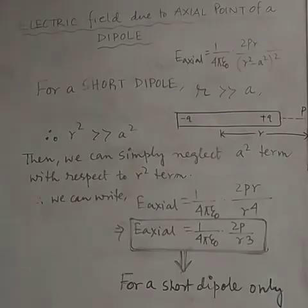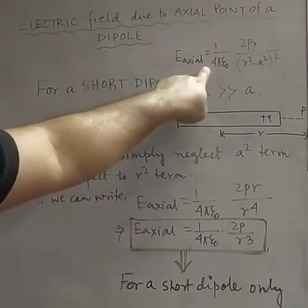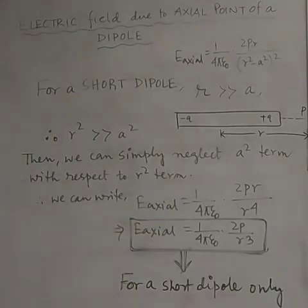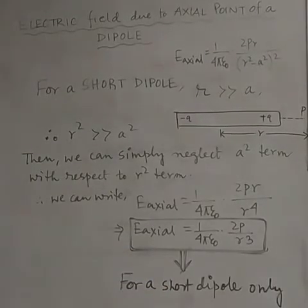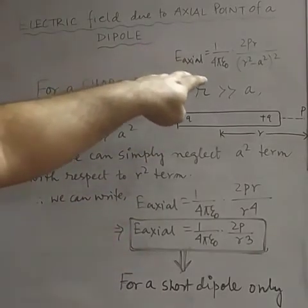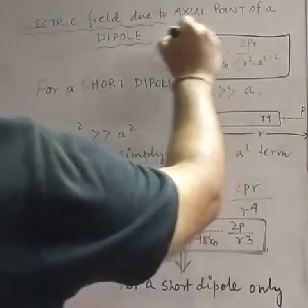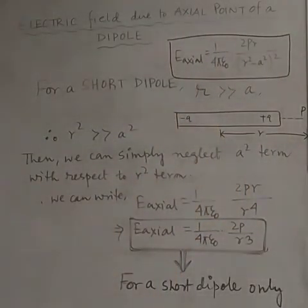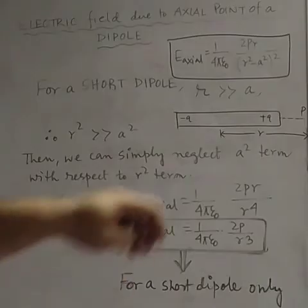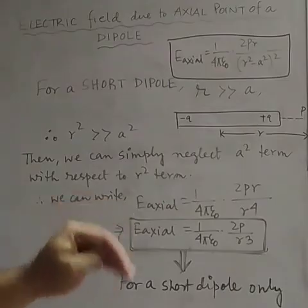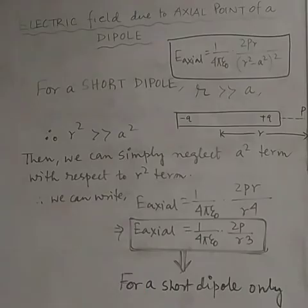This simplified expression E = (1/4πε₀)(2p/r³) applies only for a short dipole, not for a normal dipole. If the question mentions only 'dipole' without specifying short, use the general expression. But if the question specifically says 'short dipole,' then use the simplified expression.